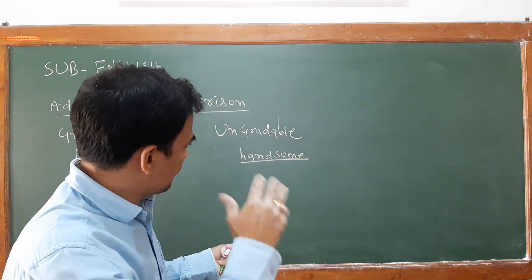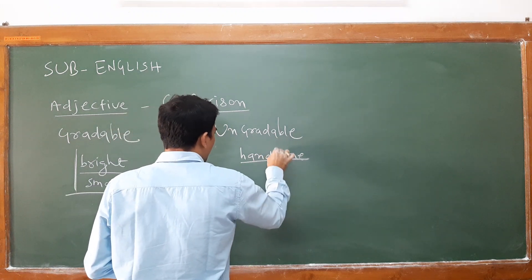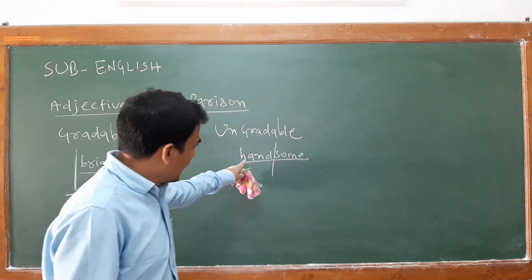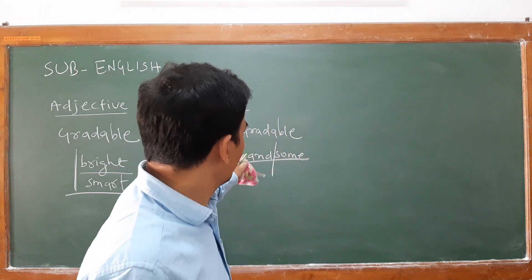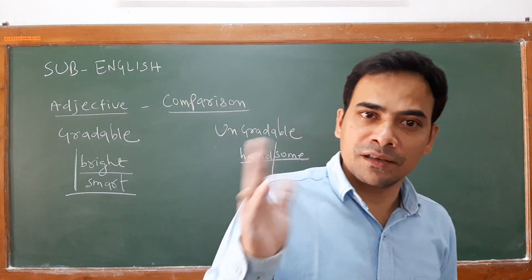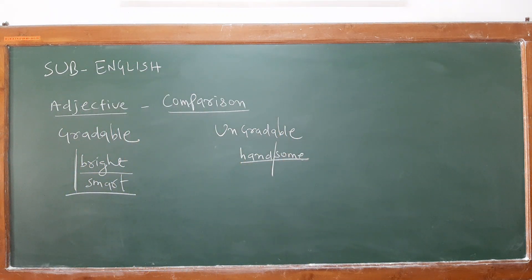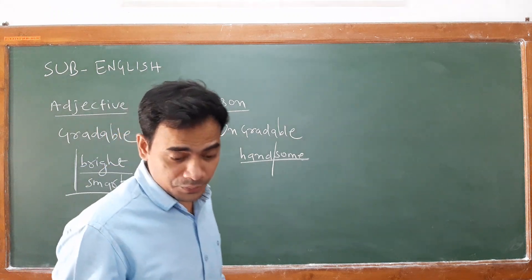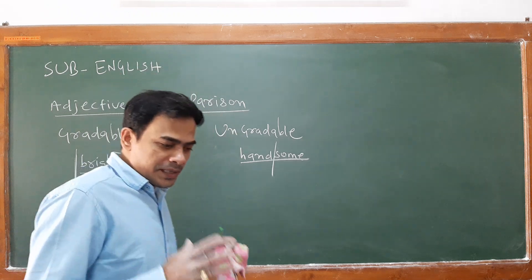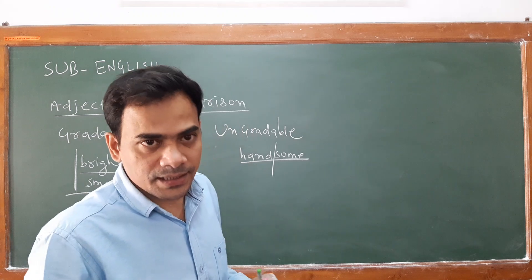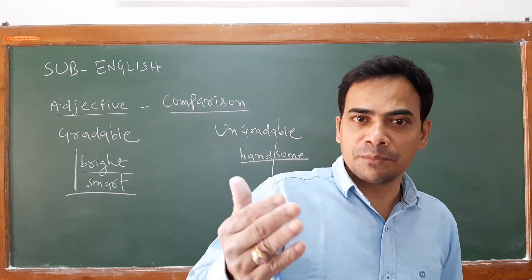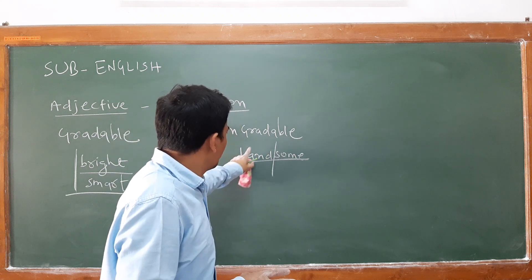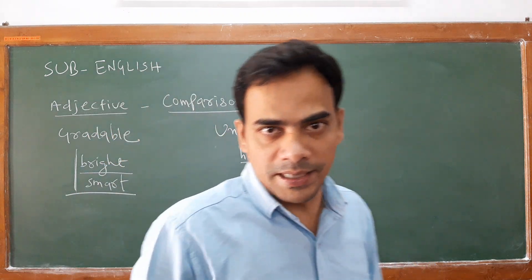If a word consists of more than one syllable — like 'handsome,' which you can divide into 'hand' and 'some' — then you use 'more' in the comparative and 'most' in the superlative form. Similarly, 'beautiful' has more than one syllable, so you go with 'more beautiful' and 'most beautiful.' Try to pronounce the word; if you find more than one part, go with 'more' and 'most.' This comes under the ungradable adjective category.